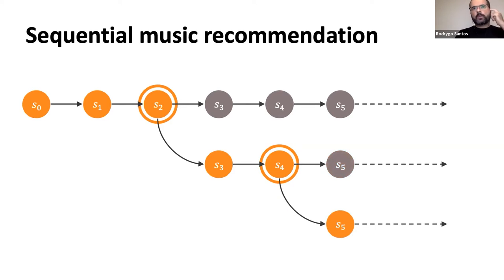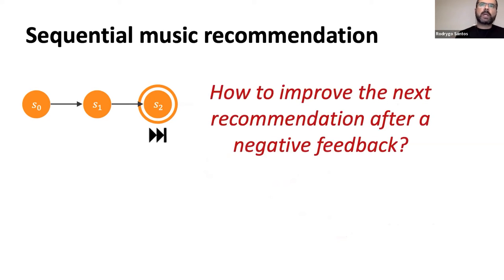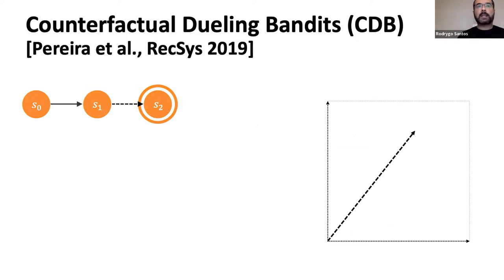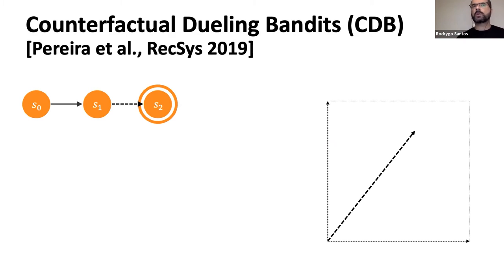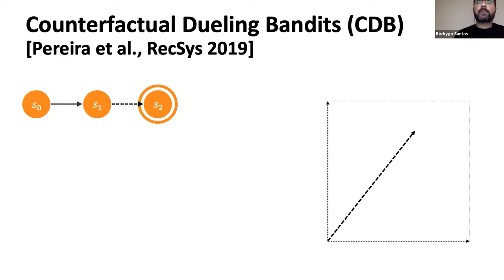The key question we want to address is how exactly can we react upon receiving negative feedback — a skip in this case? This work builds upon previous work we published at REXIS 2019, which was inspired by the literature on online learning to rank for search. Back in 2019, we proposed counterfactual dueling bandits, which was essentially an adaptation of online learning to rank for the sequential recommendation of songs.